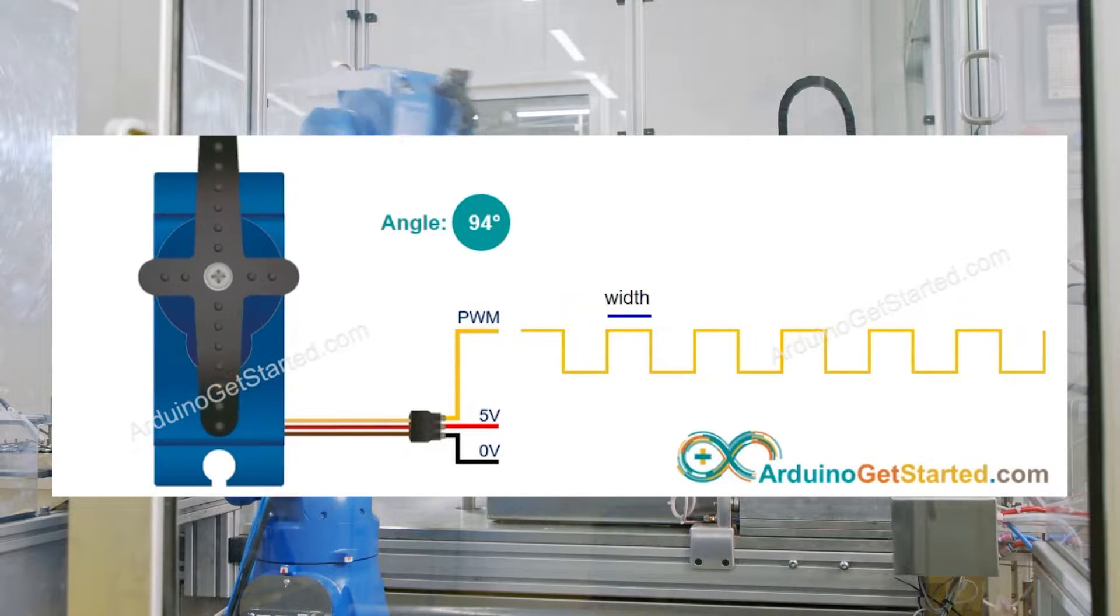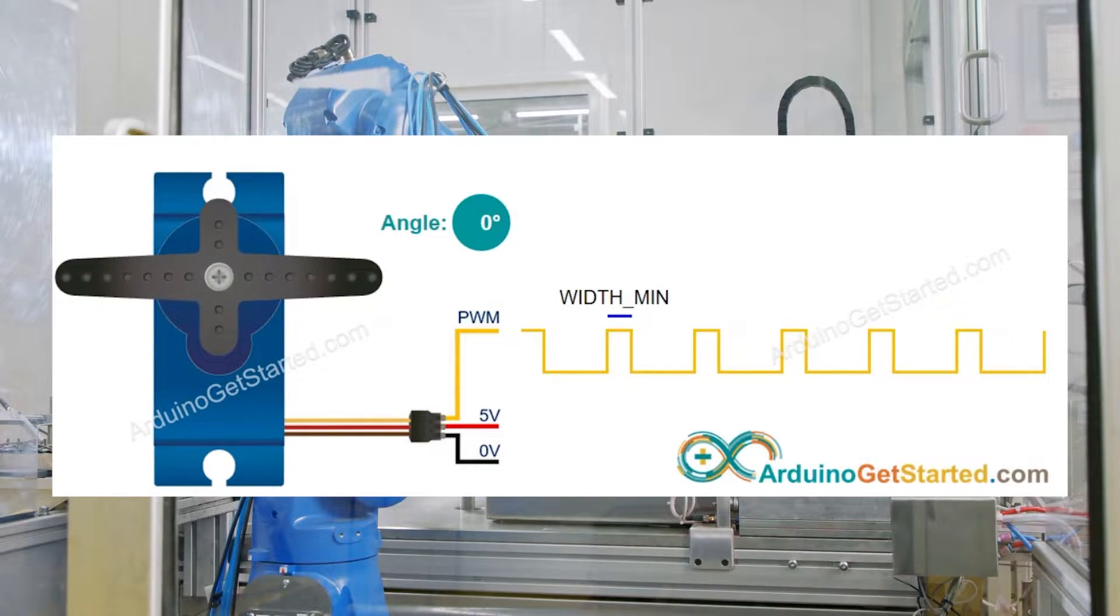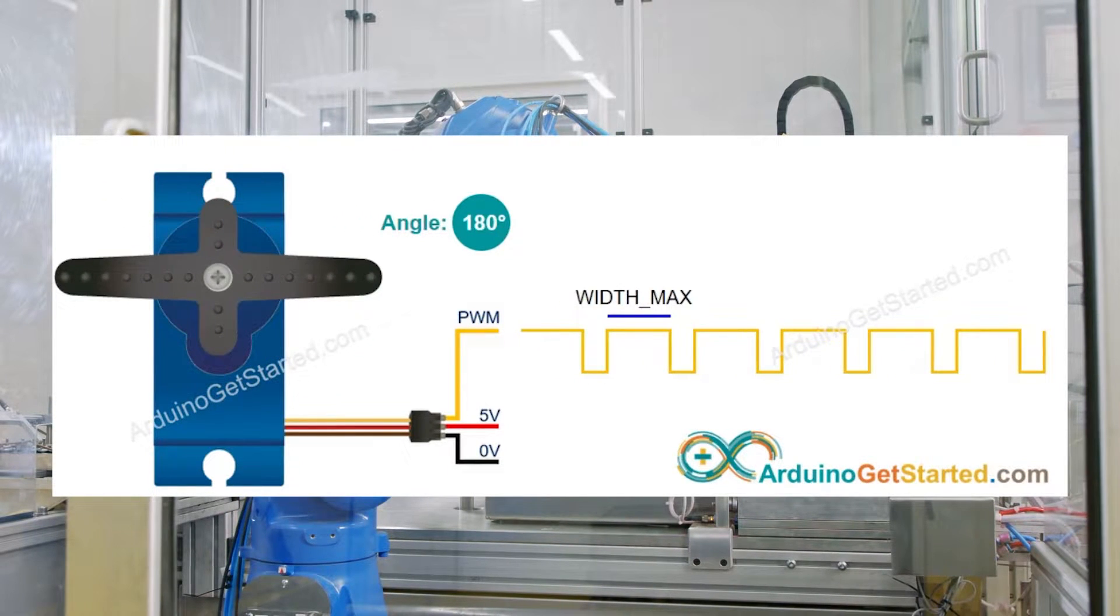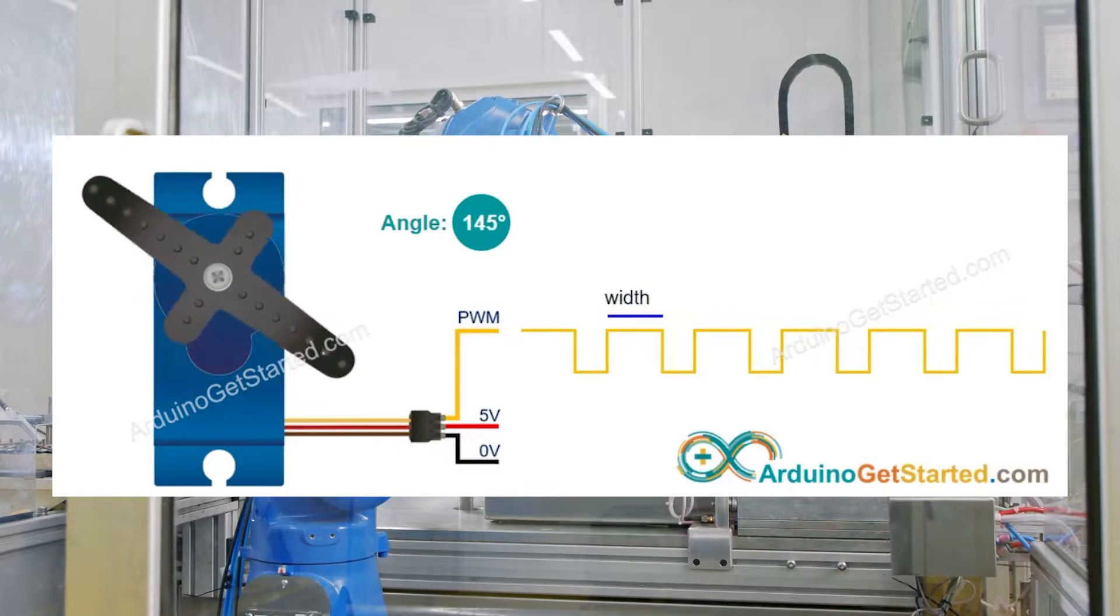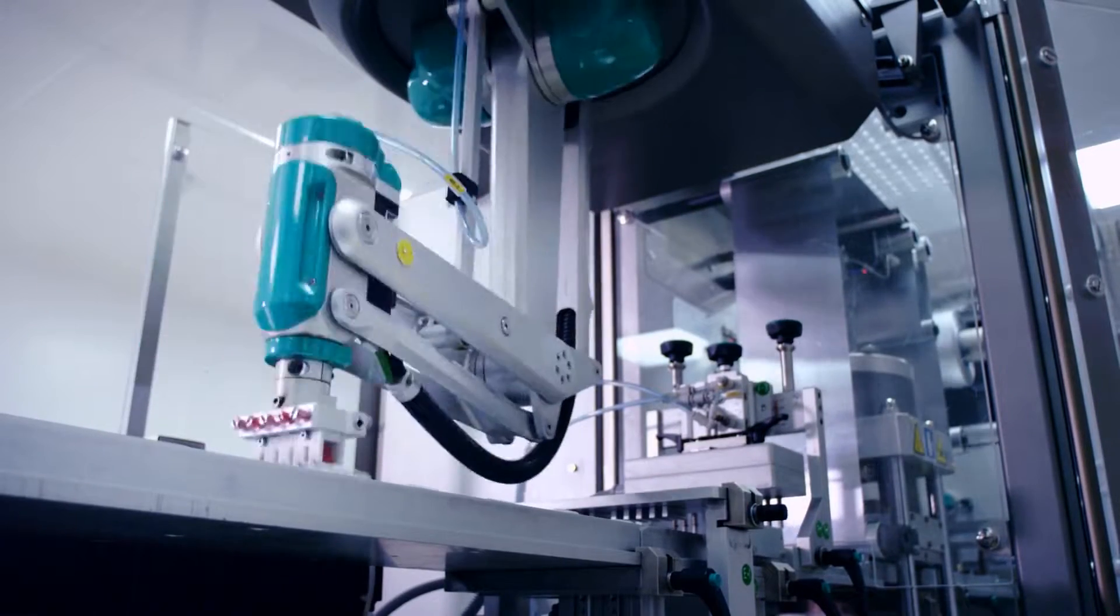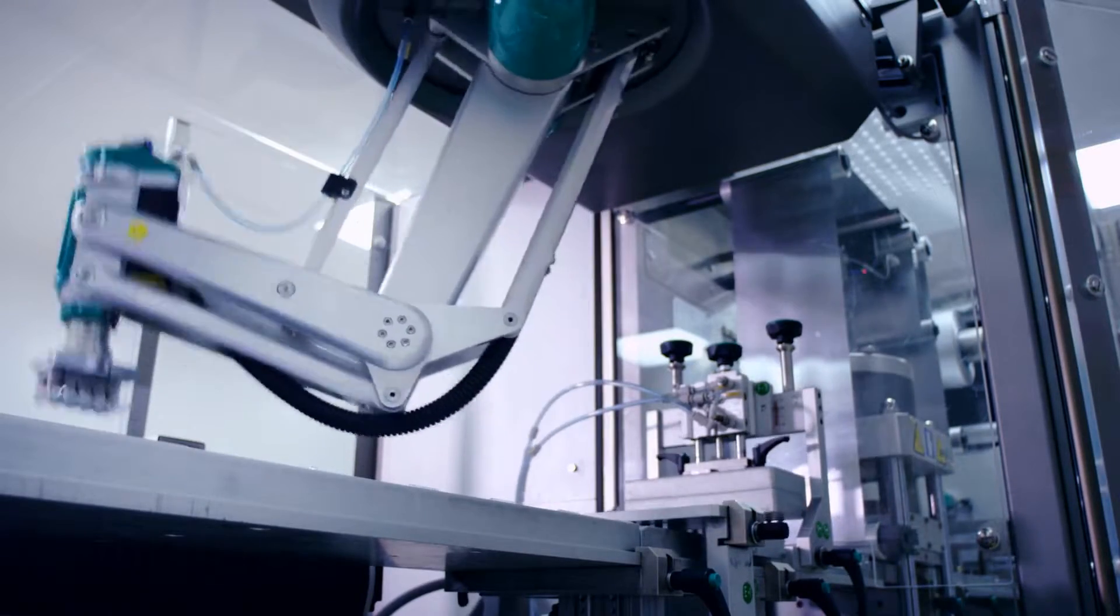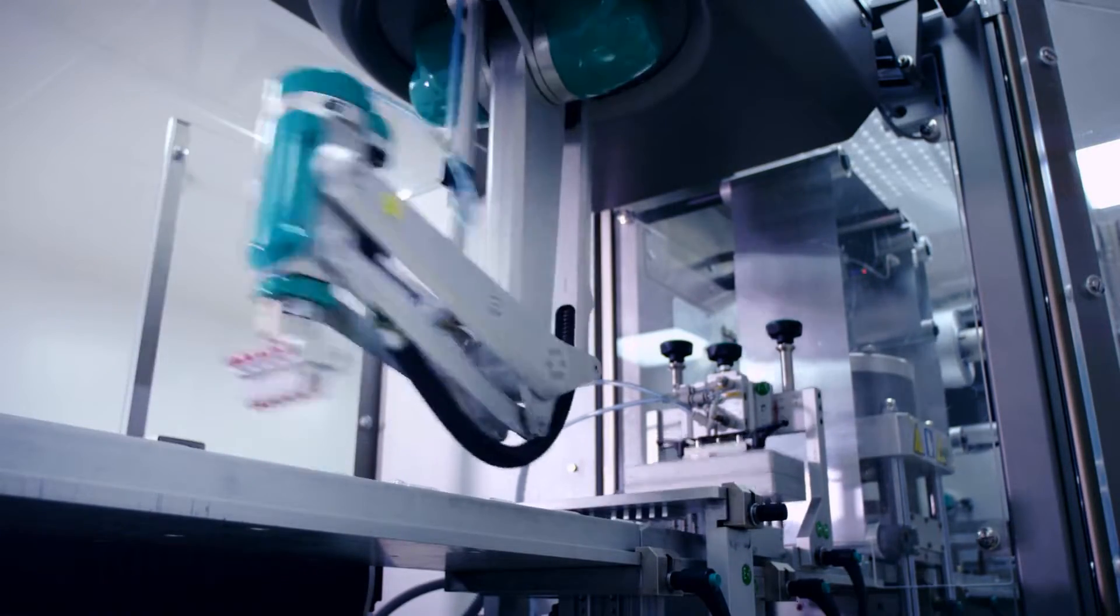This varies from motor to motor. In most cases, for example, if we provide a signal with pulse width equal to 1.5 milliseconds, the shaft of the servo motor will move 90 degrees. And if we provide a signal with less than 1.5 milliseconds, the shaft of the servo motor will move to an angle less than 90 degrees.